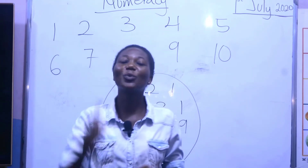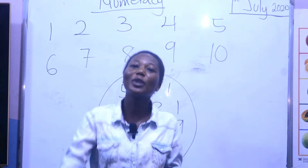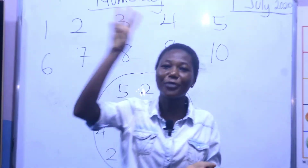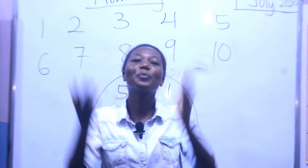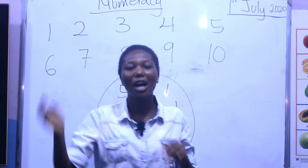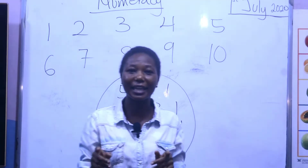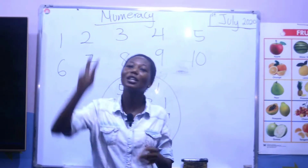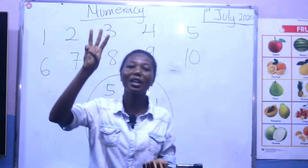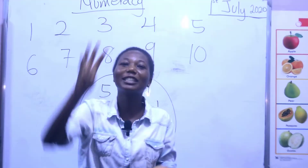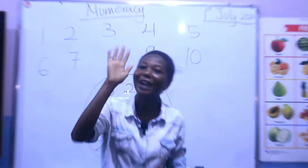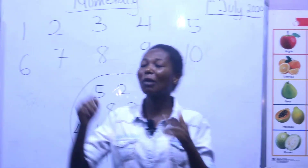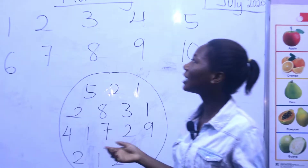One, we dig. Two, we sow. Three, we water. Four, they grow. Five, we harvest. Okay, very good. We are going to sing it once again: one we dig, two we sow, three we water, four they grow, five we harvest. Very good, thank you very much. Now let's come back to our topic for today.